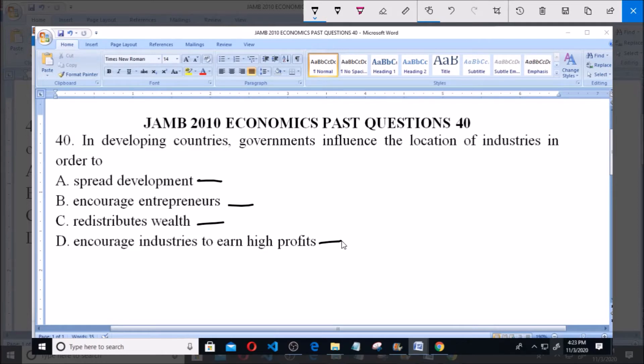The reasons for government association in the location of industries in Nigeria include: provision of employment opportunities, to check rural-urban migration, for strategic reasons, and provision of standard goods.